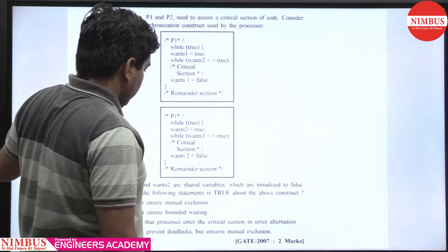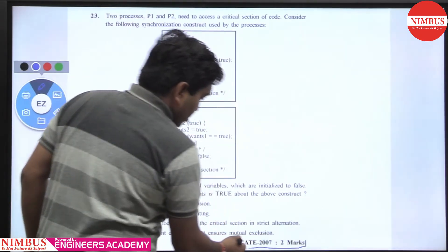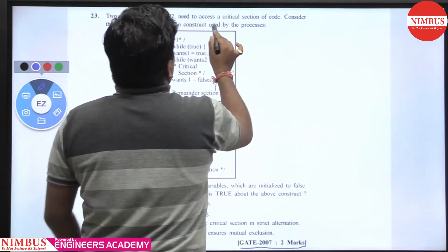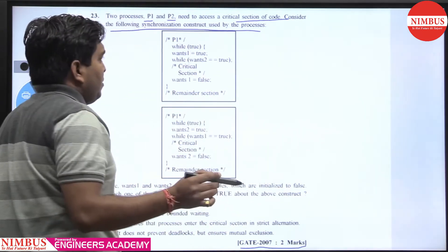Hello student, this is the question GATE 2007, 2 marks. What is saying, there are two processes P1 and P2 need to access a critical section of code. Consider the following synchronization construct used by the processes.